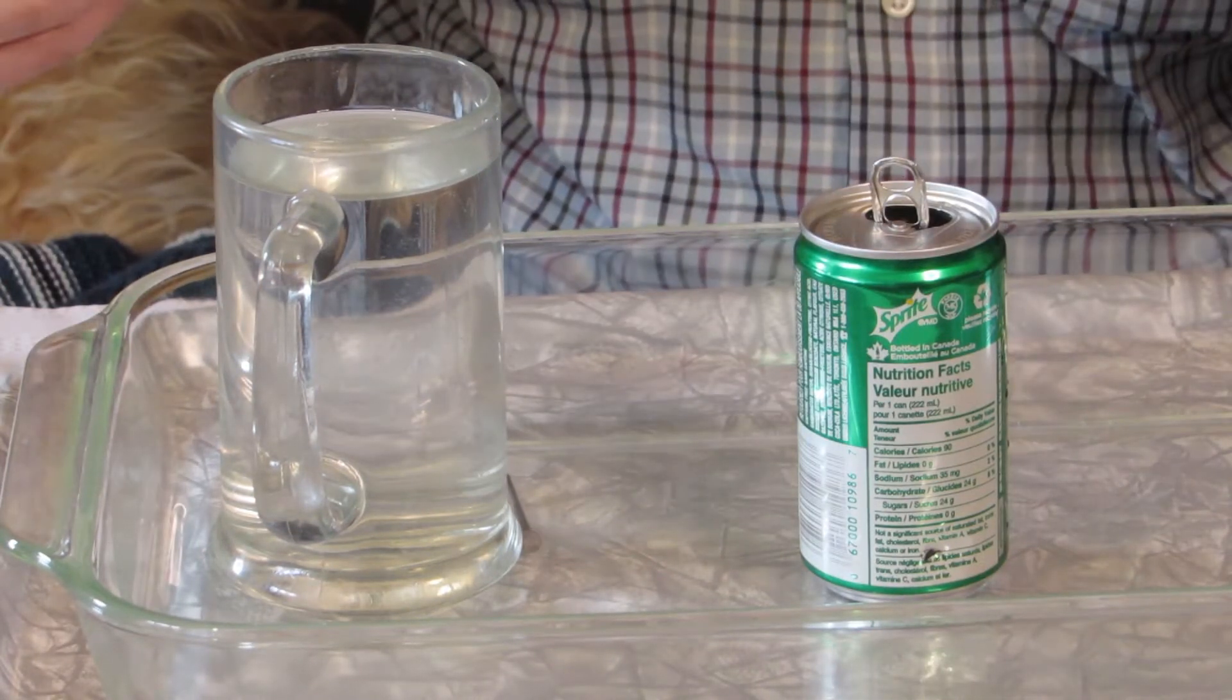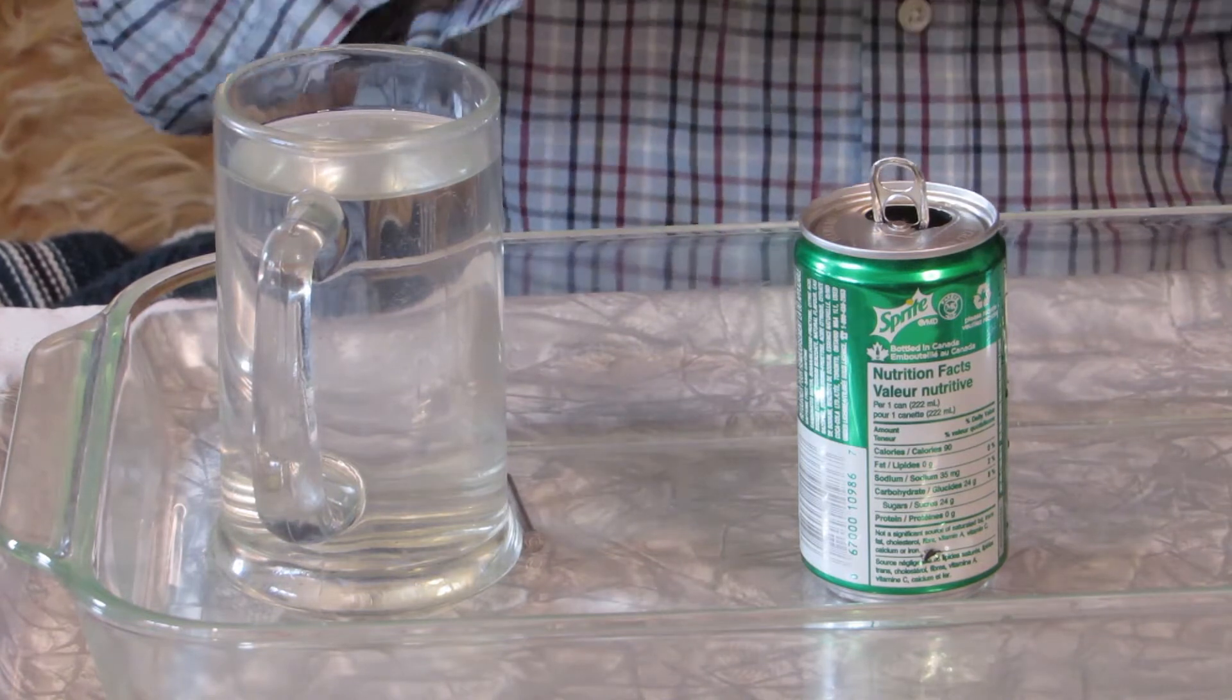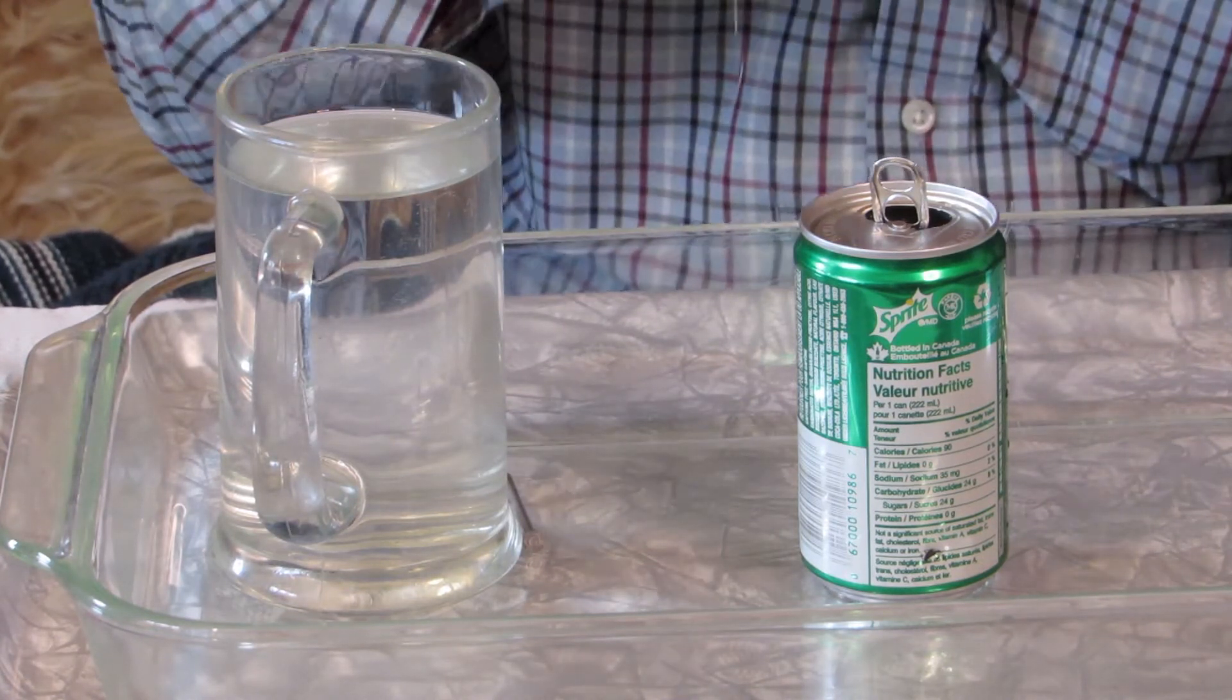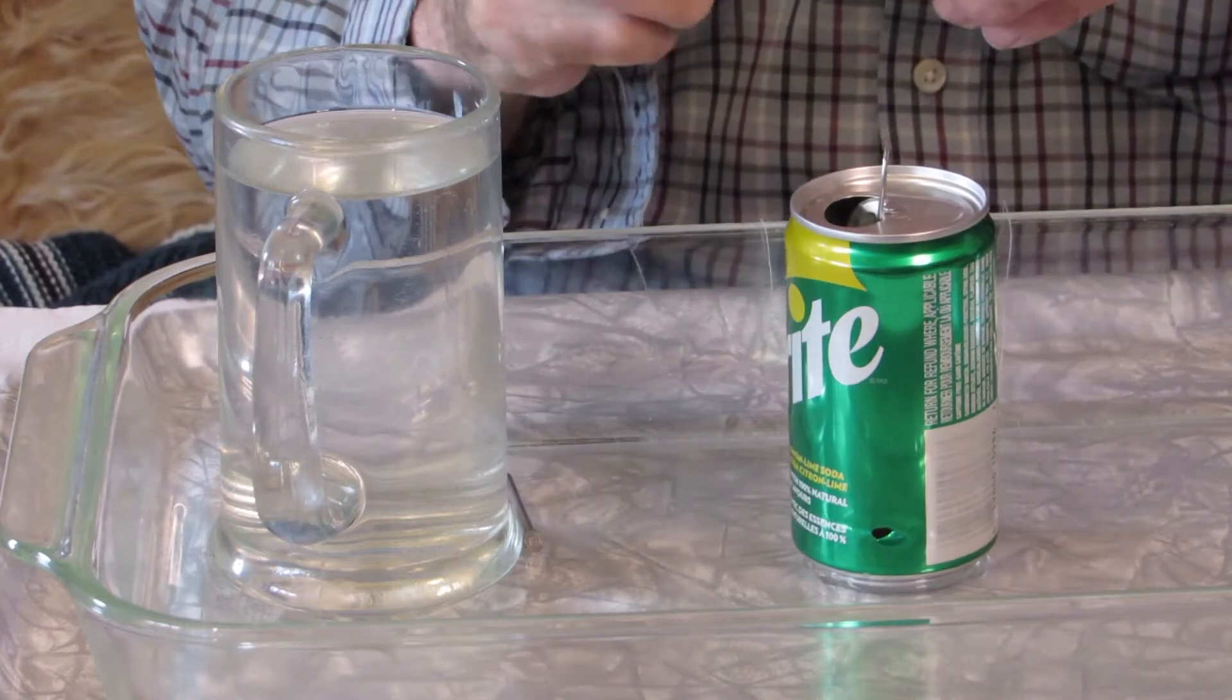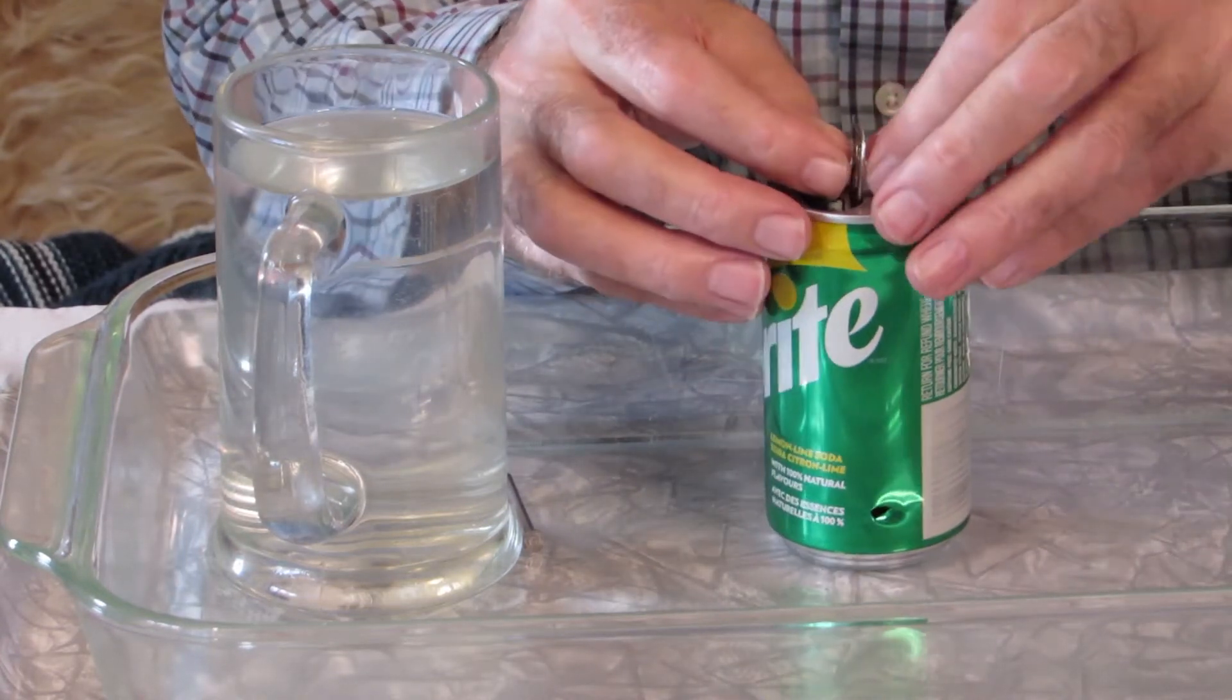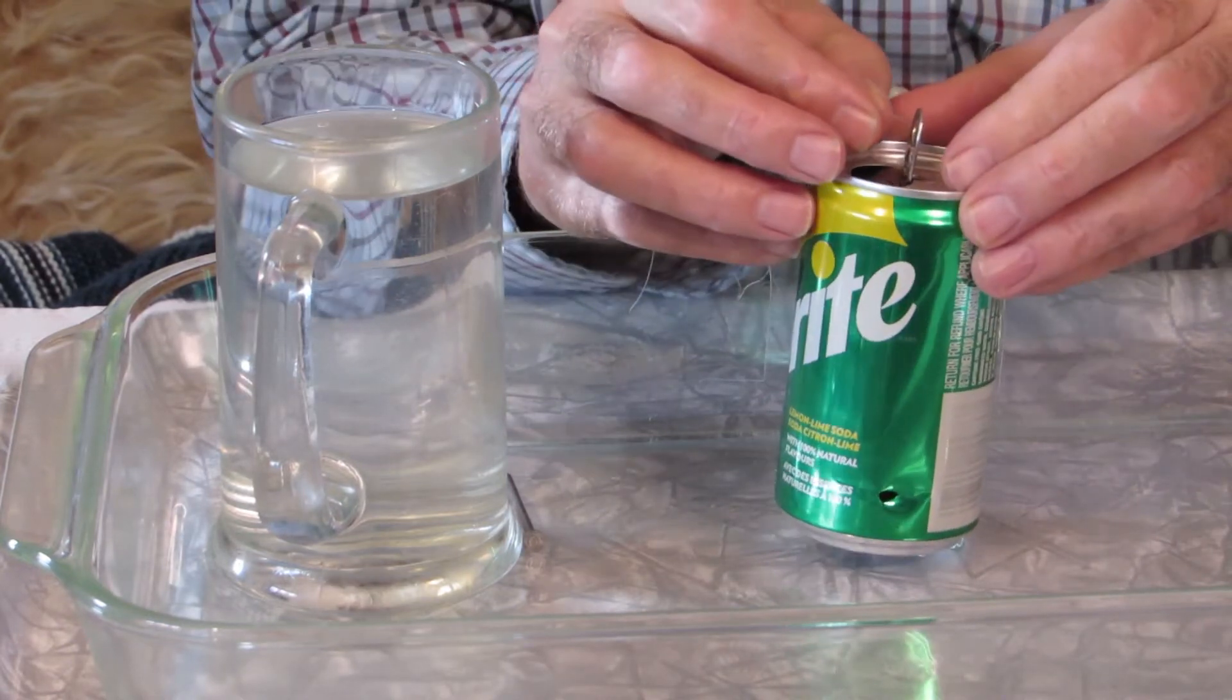We need something to hold it, so we'll just take a piece of thread, tie it on, and turn it to the top. That's a good thing about a pop can. We can pretty much balance from the top here.